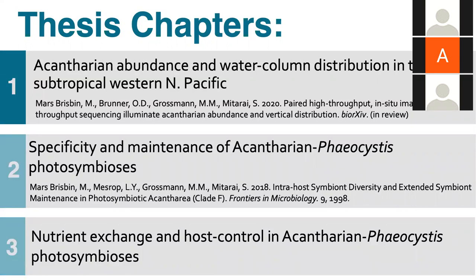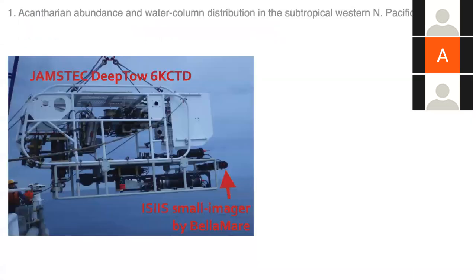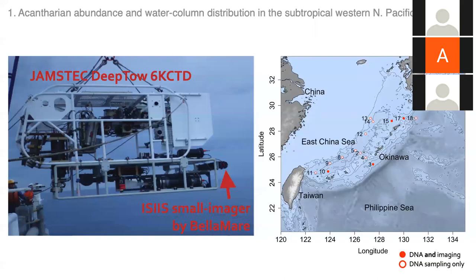For Chapter 1, I was interested in how abundant acantharians were near Okinawa where I live. Instead of deploying Niskin bottles and plankton pumps, I used an in-situ high-throughput plankton imaging system — the ISIIS small imager made by Bellamar — attached to the back of the JAMSTEC deep tow frame. This frame was deployed on a cruise from Taiwan to mainland Japan. Stations 10, 3, 15, and 17 had both imaging and DNA sampling, while all stations had seawater samples collected for DNA.